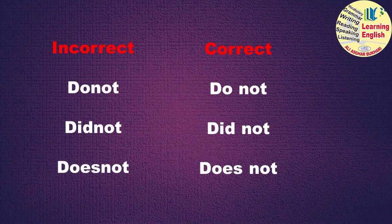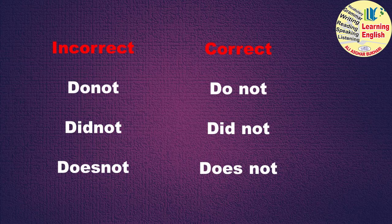نیگٹیو سنٹنسز بناتے ہوئے بہت سارے students ایسا کرتے ہیں کہ helping verbs do، did، does جب use کرتے ہیں تو ان کے ساتھ 'not' لگاتے ہوئے بیچ میں space دینا بھول جاتے ہیں۔ 'do not'، 'did not'، 'does not' کو جوڑ کے لکھ دیتے ہیں جو کہ غلط ہے۔ یہ الگ الگ ورڈز ہیں اور they must be written with spaces۔ 'did not' میں 'did' اور 'not' کے درمیان space ہونی چاہیے، اسی طرح 'does not' میں بھی 'does' اور 'not' کے درمیان space ہوگی، تب درست ہوگا۔